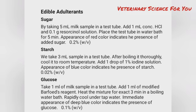Detection of glucose — take 1 ml of milk sample in a test tube and add 1 ml of modified Barfoed's reagent. Heat the mixture for exactly three minutes in a boiling water bath, then rapidly cool under tap water. Immediate appearance of deep blue color indicates the presence of glucose.